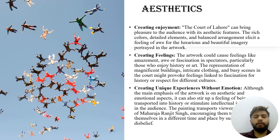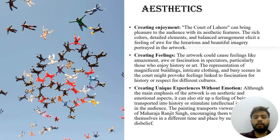The fourth objective is creating enjoyment. It brings pleasure to the audience through its aesthetic features — rich colors, detailed elements and balanced arrangement — portraying a feeling of luxury and beautiful imagery in the artwork. The fifth objective is creating a feeling of amusement and fascination in spectators, especially those who enjoy art history. The visual representation of clothing, buildings and the busy scene in the court may provoke feelings linked to fascination and respect for different cultures. The sixth objective is creating unique experiences through emotion. It stirs a feeling of being transported into history, encouraging the audience to imagine themselves in a different time and place.